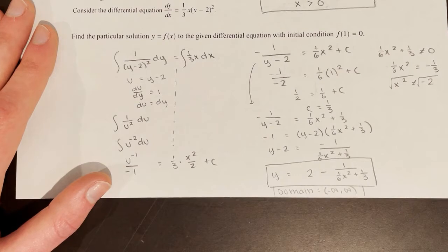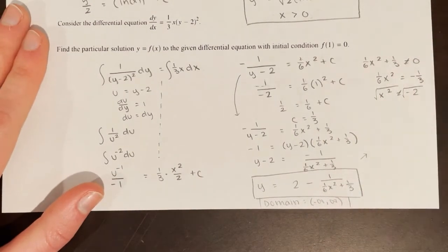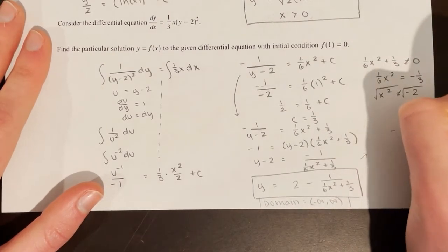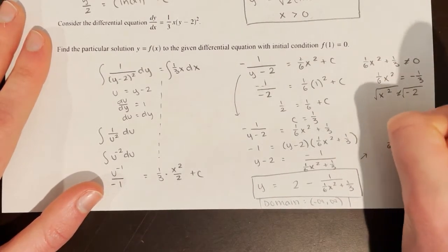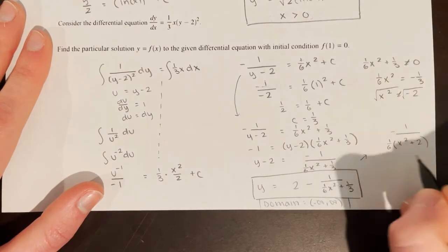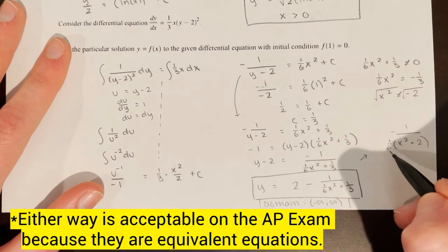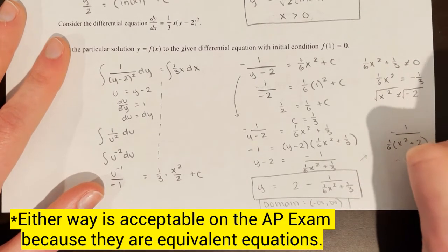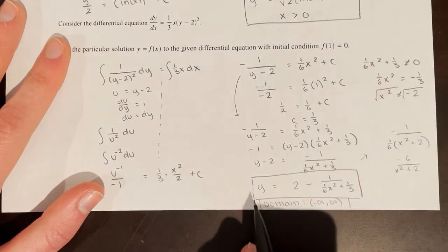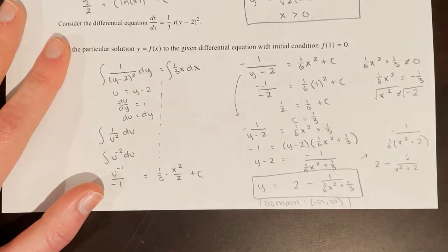Just to note: if you wanted to simplify, you could factor out 1/6 from the denominator, giving -1/[(1/6)(x²+2)]. Since -1 divided by 1/6 is -6, the simplified answer is y = 2 - 6/(x²+2).